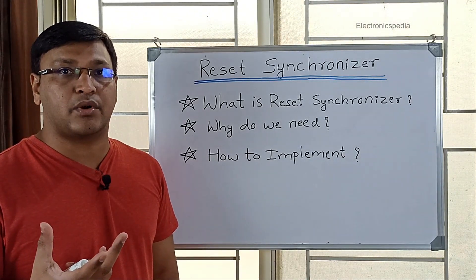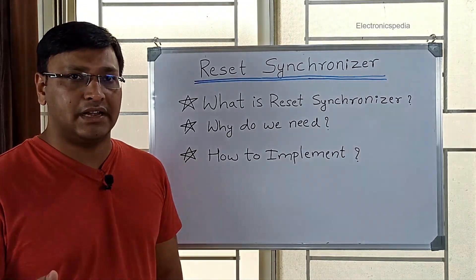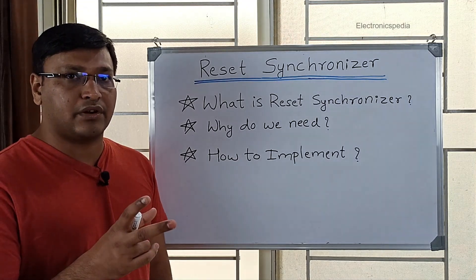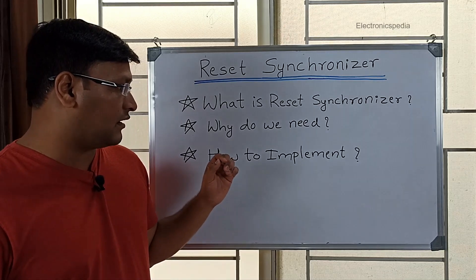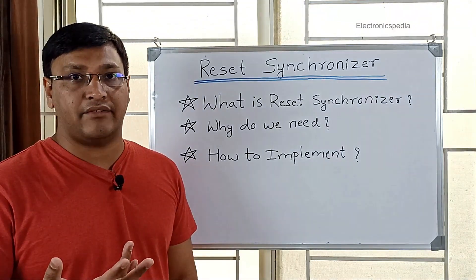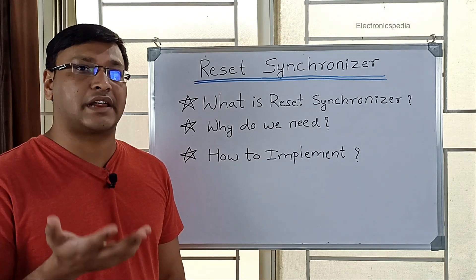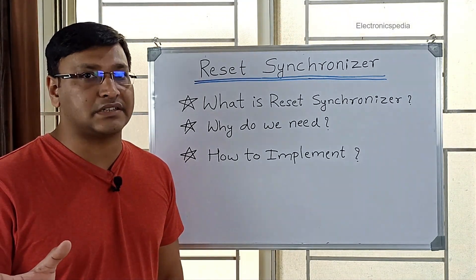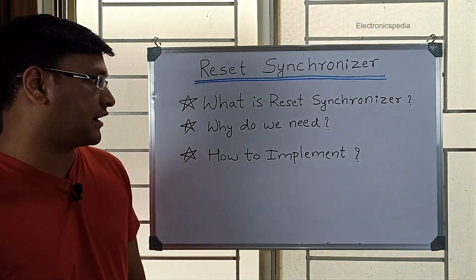To implement a reset synchronizer, we will use the data synchronizer structure and modify it so that it becomes a reset synchronizer. There are two variants of the reset synchronizer: one for active high reset and one for active low reset.